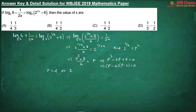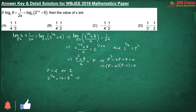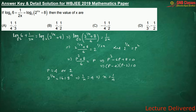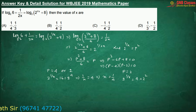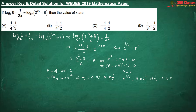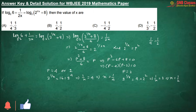When p is 4, we can write 2 to the power 1 by x equals 16, which is 2 to the power 4. So from here, 1 by x equals 4, which implies x equals 1 by 4. When p is 2, then 2 to the power 1 by x equals 4, which is 2 squared. That implies 1 by x equals 2, so x equals one half. Therefore, the values of x are 1 by 4 or one half.